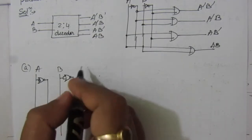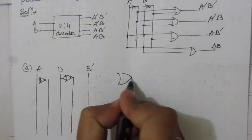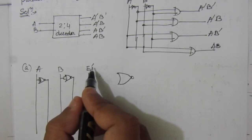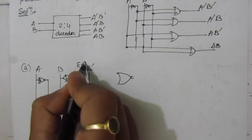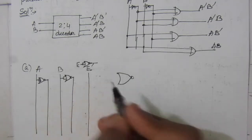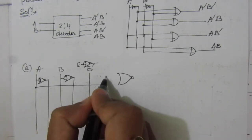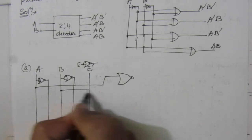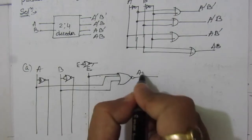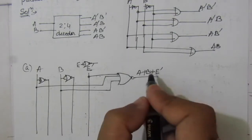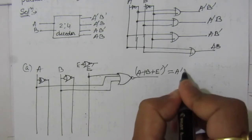Now let us use a NOR gate, and here we will have an enable input. For the NOR gate case, we will have an inverted enable input. To get the inverted enable, we use a NOR gate inverter — so if we have E here, a shorted-input NOR gate gives us Ē. For the first output, we take inputs A, B, and Ē into a NOR gate, giving us (A + B + Ē)'. By De Morgan's theorem, this equals A̅B̅E.